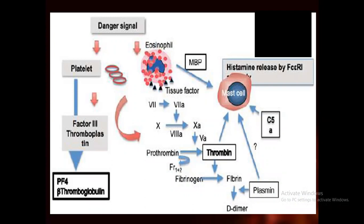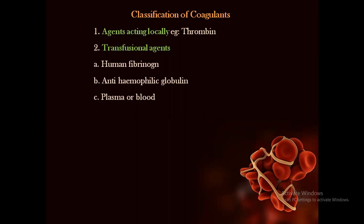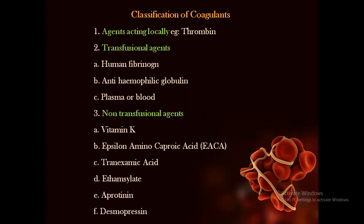All these conditions have to be studied appropriately — whether we need coagulation or anticoagulation. Classification of coagulants includes: first, agents acting locally, example thrombin; then transfusional agents including human fibrinogen, anti-hemophilic globulin, and plasma or blood; and non-transfusional agents like vitamin K, epsilon-aminocaproic acid (EACA), tranexamic acid, ethamsylate, aprotinin, and desmopressin.